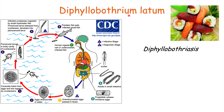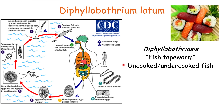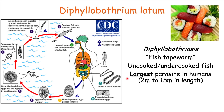Being infected with Diphyllobothrium latum leads to the condition known as diphyllobothriasis. Diphyllobothrium latum is also known as the fish tapeworm, and it comes from uncooked or undercooked fish — found in sushi, sashimi, or other dishes containing raw or undercooked fish. Diphyllobothrium latum is actually the largest or longest parasite in humans, ranging from 2 meters up to 15 meters in length.